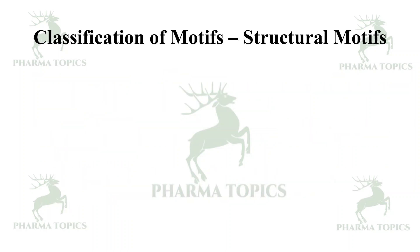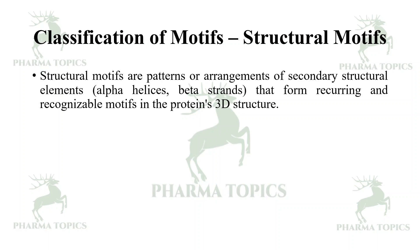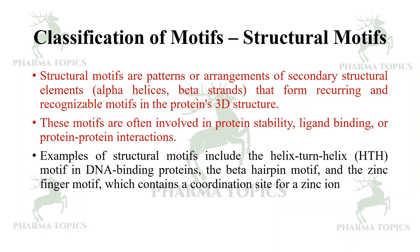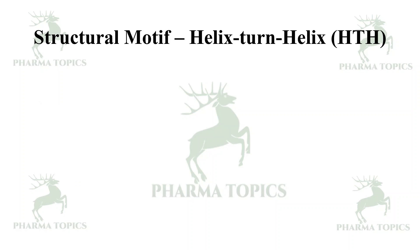Next is structural motifs. Structural motifs are patterns or arrangements of secondary structural elements in proteins — such as alpha helices and beta strands — that form recurring and recognizable motifs in the protein's 3D structure. These motifs are often involved in protein stability, ligand binding, or protein-protein interactions. Examples include the helix-turn-helix motif in DNA binding proteins, the beta hairpin motif, and the zinc finger motif, which contains a coordination site for the zinc ion.